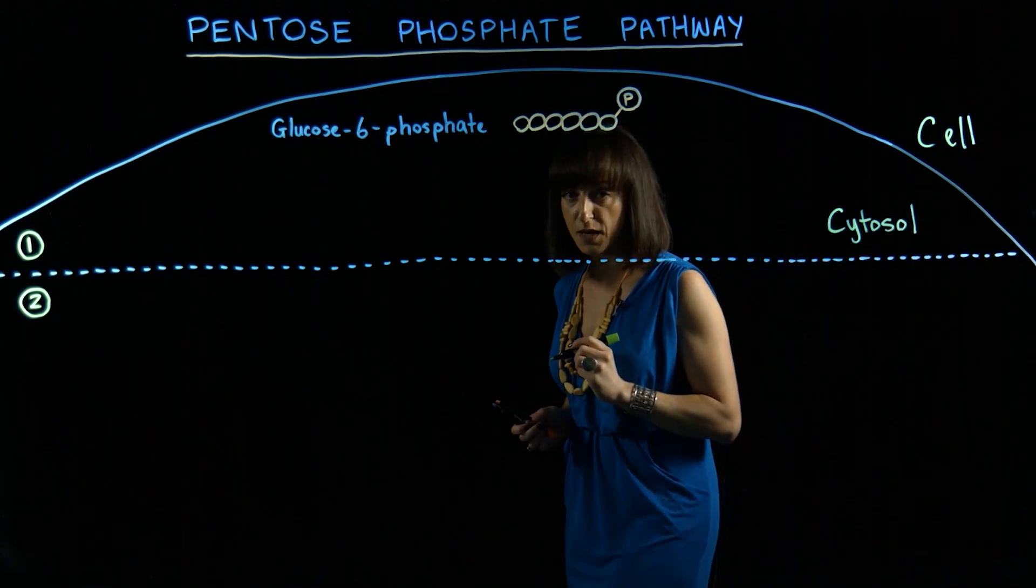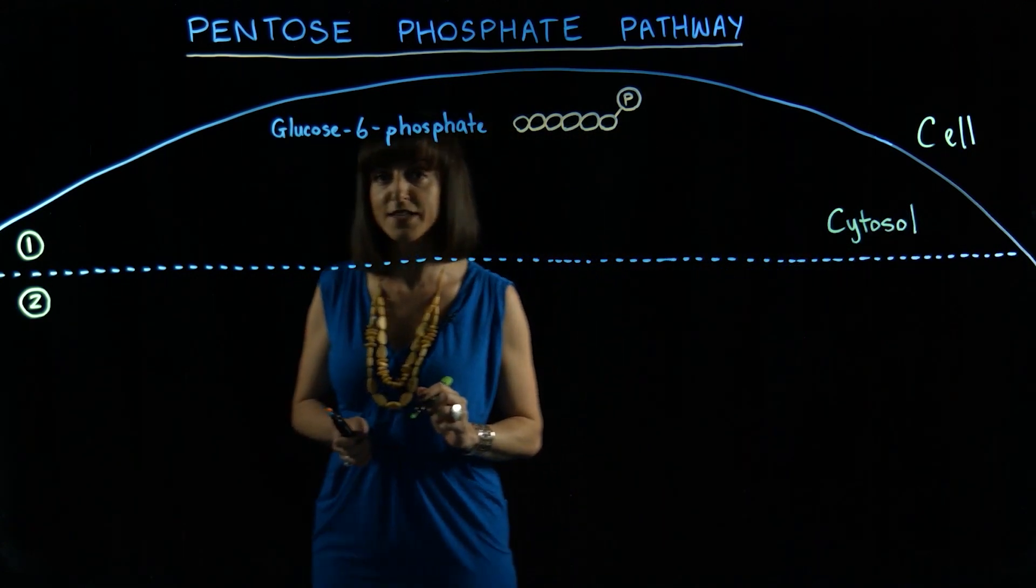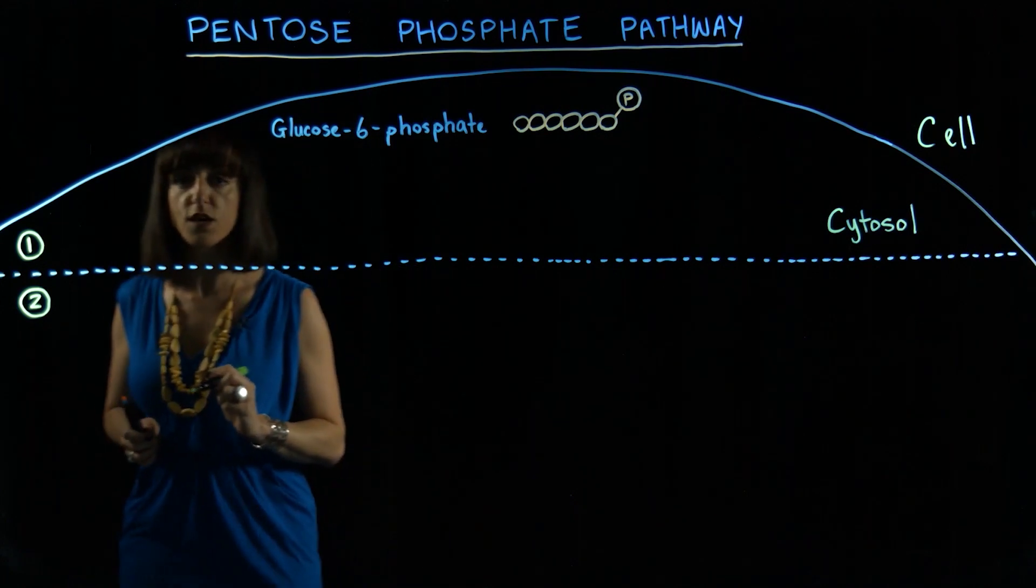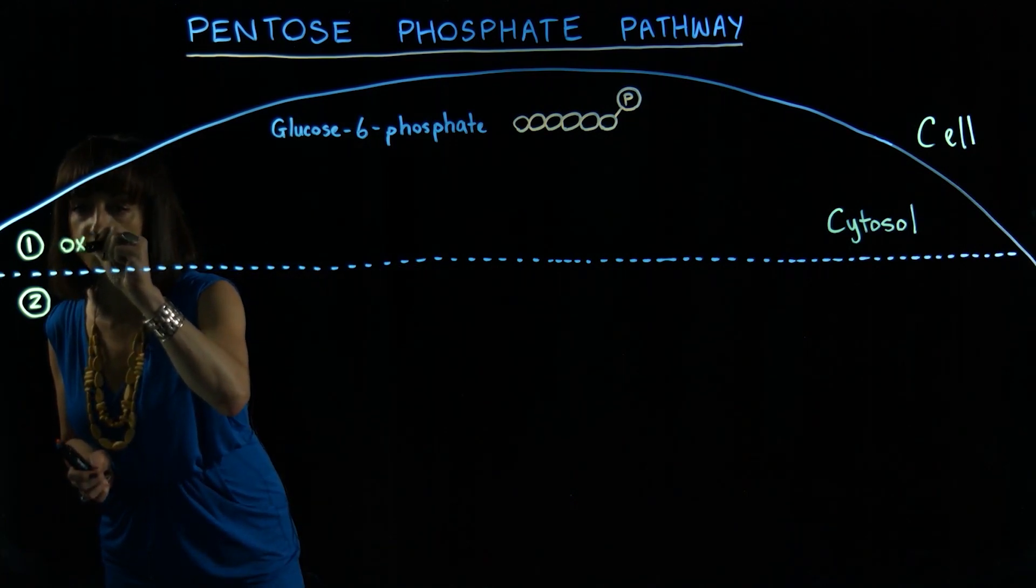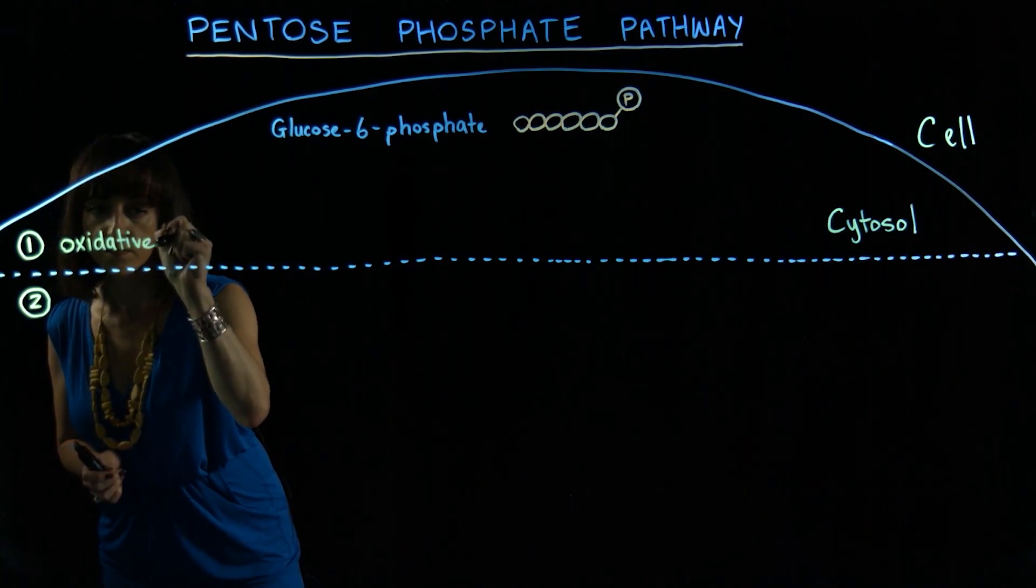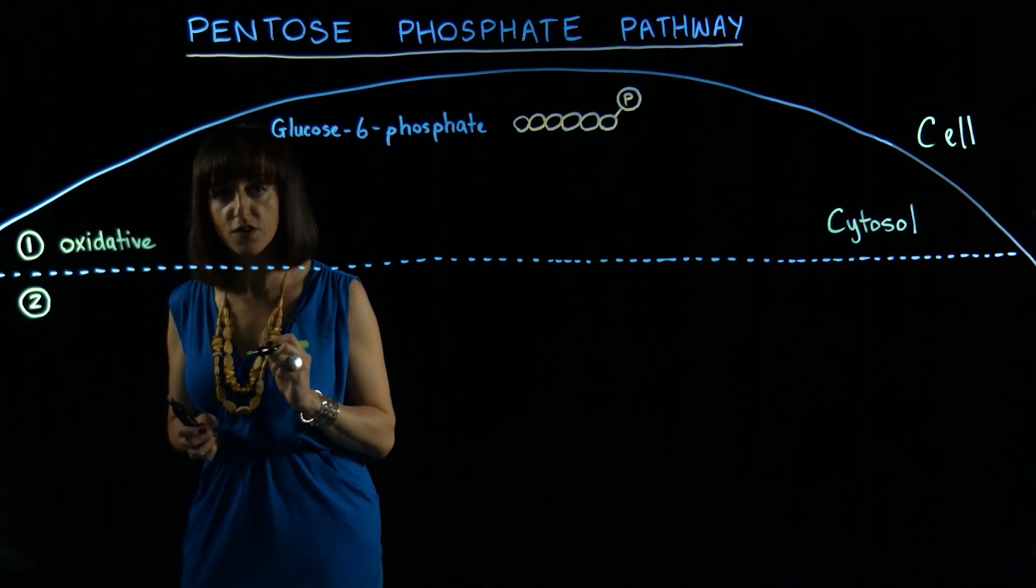The pentose phosphate pathway has two main phases. The first phase is an oxidative phase, and the second phase is a non-oxidative phase.